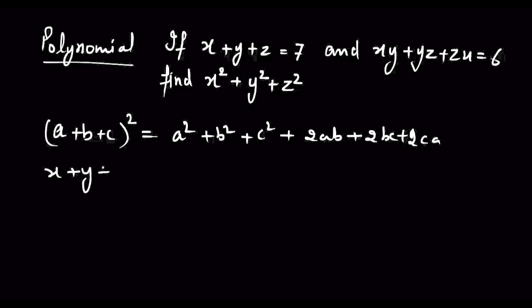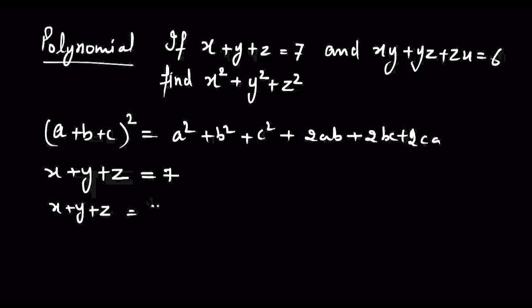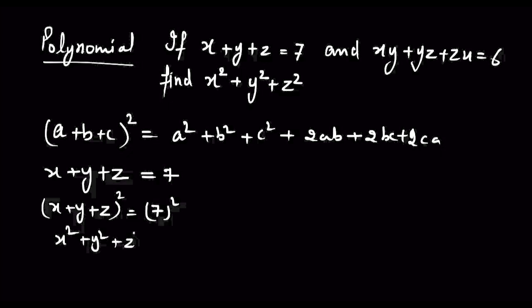x plus y plus z equal to 7 given है, हमको find out करनी है x square plus y square plus z square की। इस पे हम squaring both sides करेंगे। x plus y plus z equal to 7 को square कर दीजिए दोनों sides से और यह वाली identity लगाकर open कर दीजिए: x square plus y square plus z square plus 2xy plus 2yz plus 2zx equal to 49।